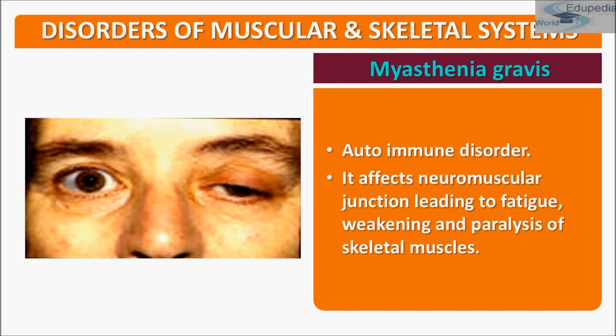Myasthenia Gravis is a neuromuscular disease that leads to fluctuating muscle weakness and fatigue. In most common cases, muscle weakness is caused by circulating antibodies that block acetylcholine receptors at the post-synaptic neuromuscular junction, inhibiting the excitatory neurotransmitter acetylcholine on nicotinic receptors. It can be treated with medications such as immunosuppressants and acetylcholinesterase inhibitors. This disease is diagnosed only in 3 to 30 people per million per year, and diagnosis is becoming more common due to increased awareness.